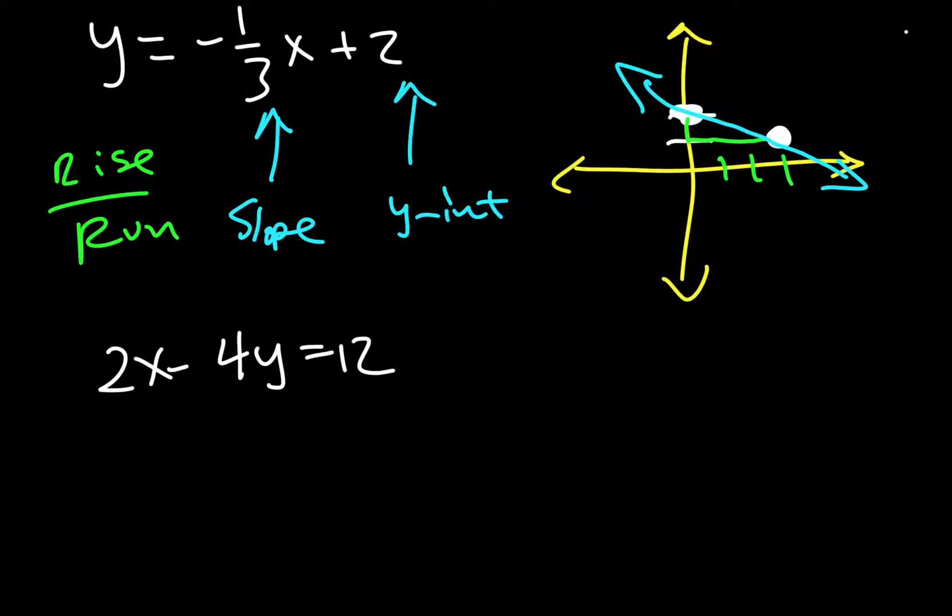So one way you could do it, you could solve for y and then do it the same way we did it above because it would be in slope intercept form like it is right here.